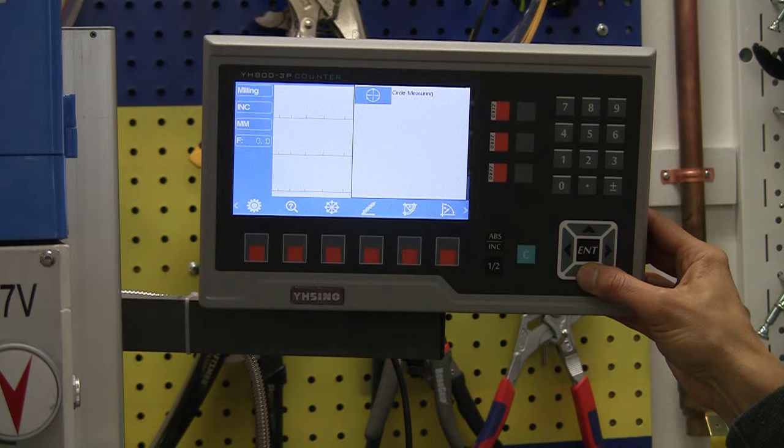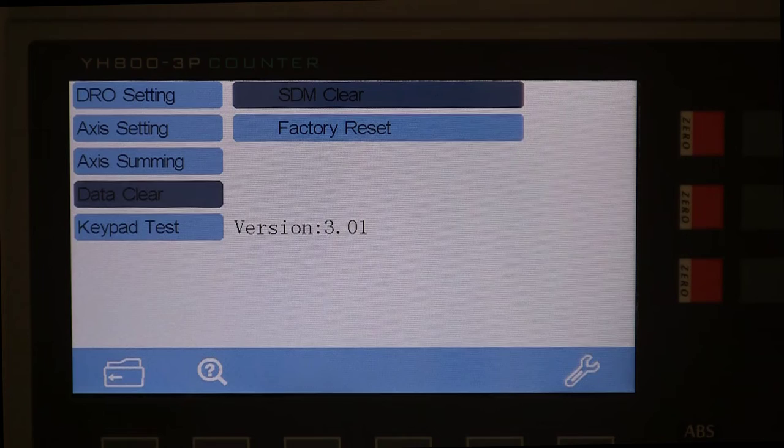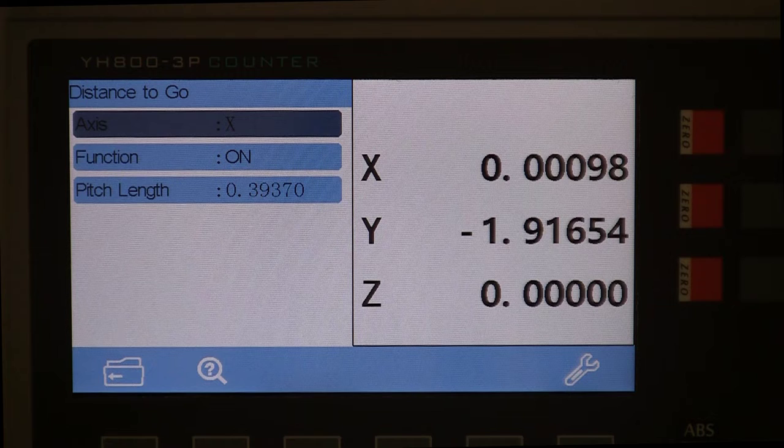There is a screen to do a factory reset and you can also clear all the subdatums in one place. There is a nice distance to go feature as well which may be helpful. I have not tried it yet.